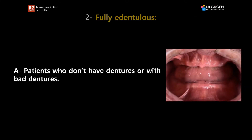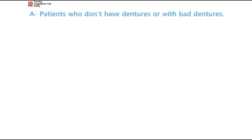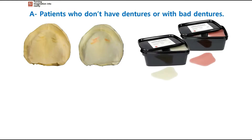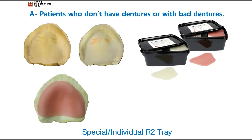For patients who don't have dentures or with bad dentures, the way we manage these cases is we always start with an impression. Then the next step is to make what we call a special or individual R2 tray. The R2 tray is a radiopaque tray, which means it shows in the CBCT. The standard R2 tray will not fit in a fully edentulous patient's mouth, so we need to fabricate a special R2 tray.